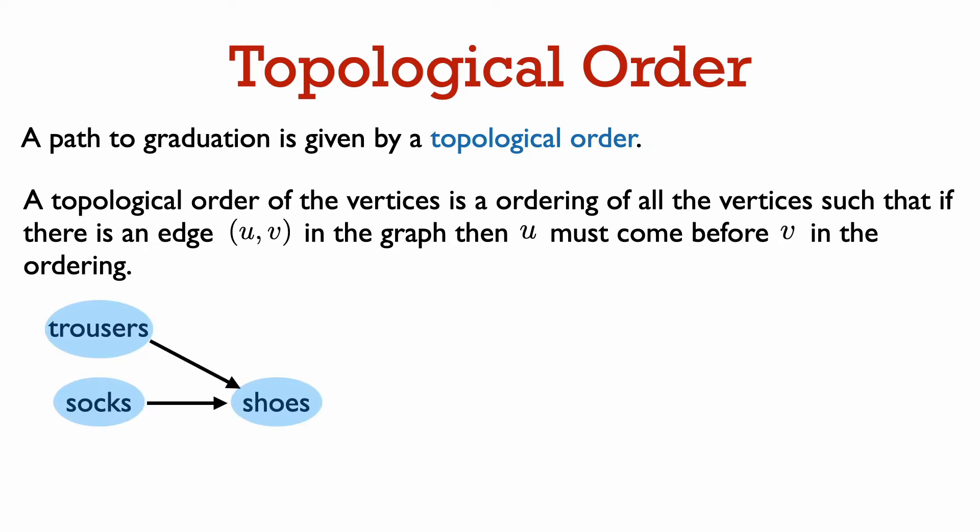So let's go back to our simple getting dressed example, where we have the tasks of putting on your trousers, putting on your socks, and putting on your shoes. So here's one possible topological sort in this example. We can first put on our trousers, then put on our socks, and third, put on our shoes.